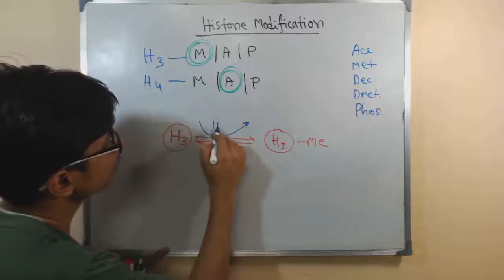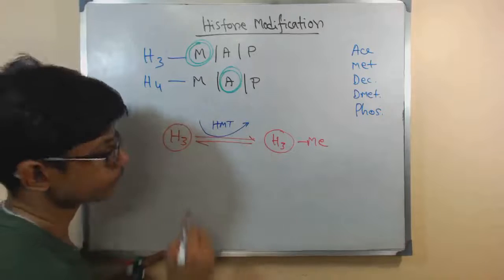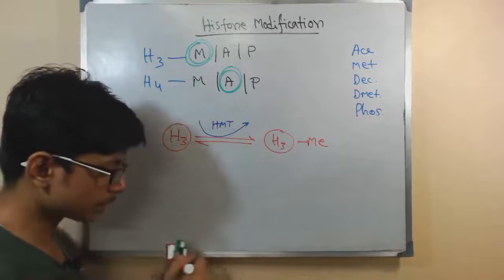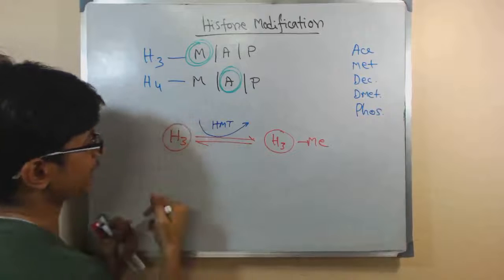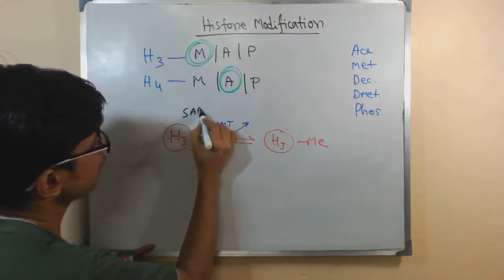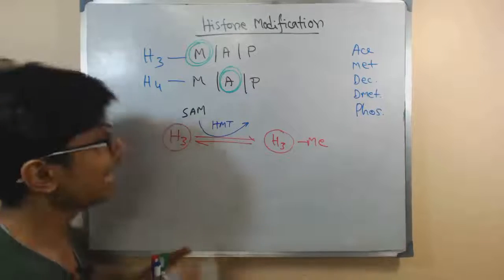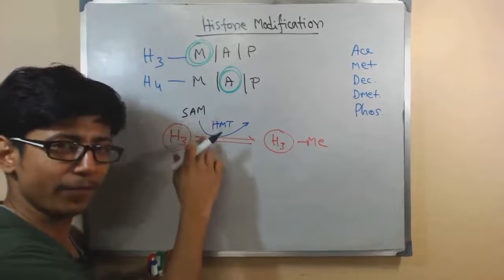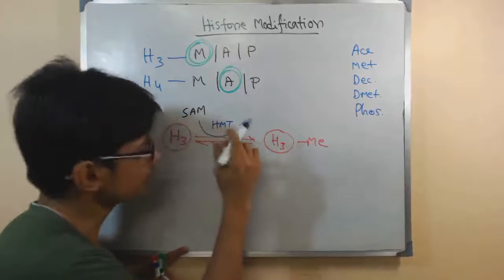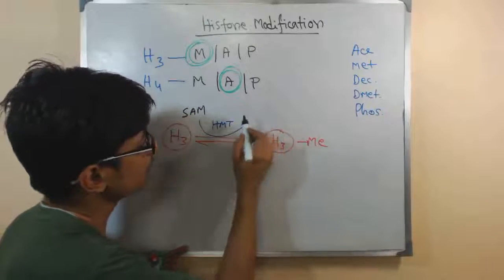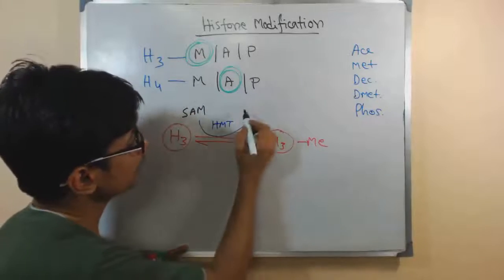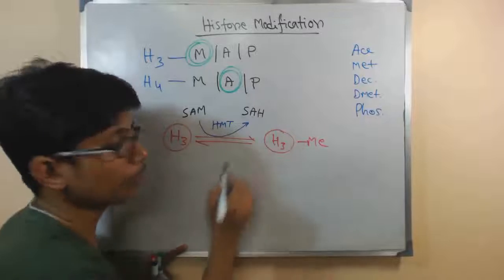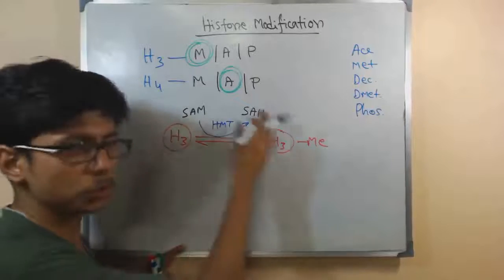Histone methyltransferase works here, and for this process to occur there is a cofactor acting: S-adenosylmethionine as a cofactor. We know if SAM or S-adenosylmethionine is involved, ultimately the process of methyl transfer will produce S-adenosylhomocysteine or SAH, the simple pathway.